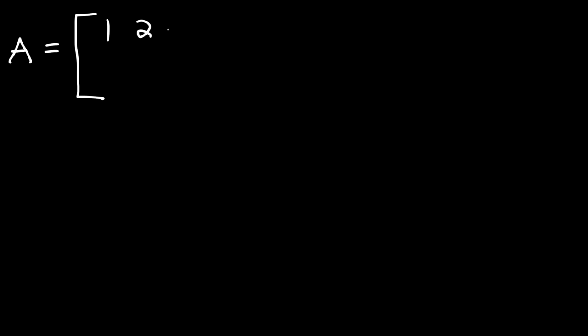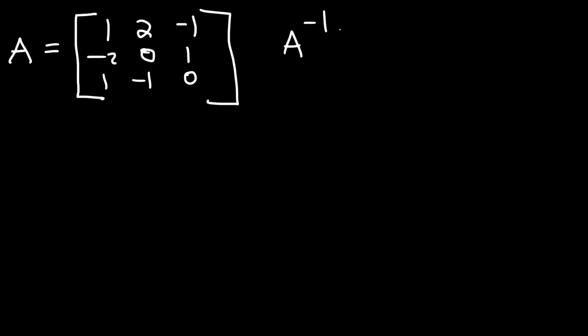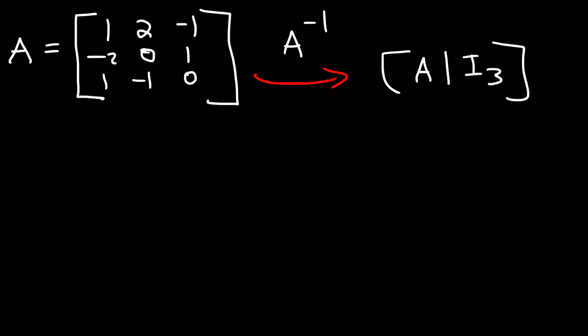In this video, we're going to talk about how to determine the inverse of a 3x3 matrix. So let's say we have matrix A, and it contains the elements 1, 2, negative 1, negative 2, 0, 1, 1, negative 1, and 0. Go ahead and determine the inverse of matrix A. First, we need to rewrite this in the form of an augmented matrix, with matrix A and the multiplicative identity of a 3x3 matrix.